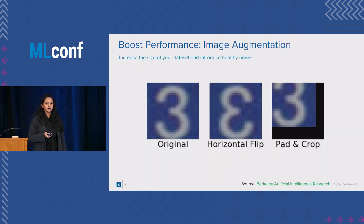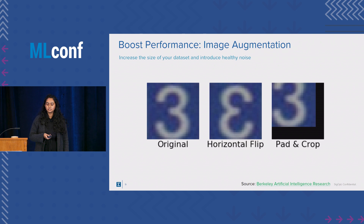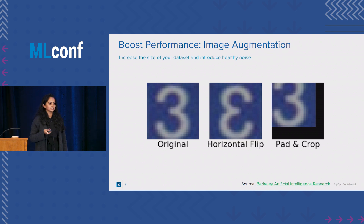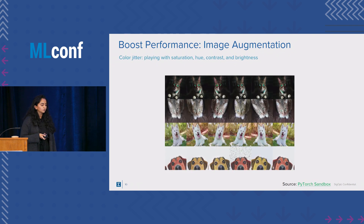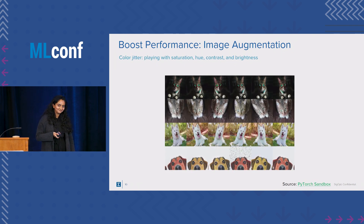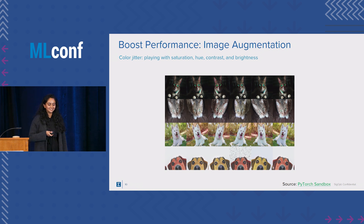For image augmentation, our approach will be very simple. It will go through transformations such as horizontal flip and random cropping, and we'll also play with color jitter — which includes saturation, hue, contrast, and brightness.